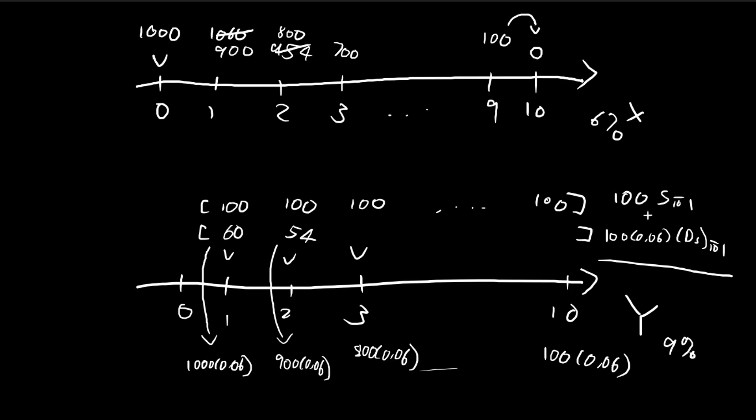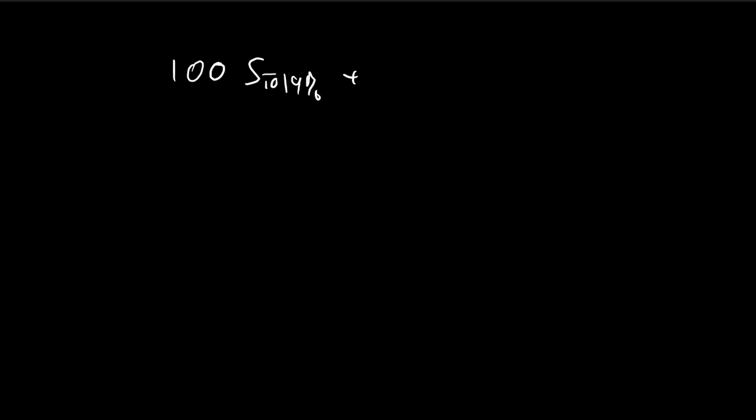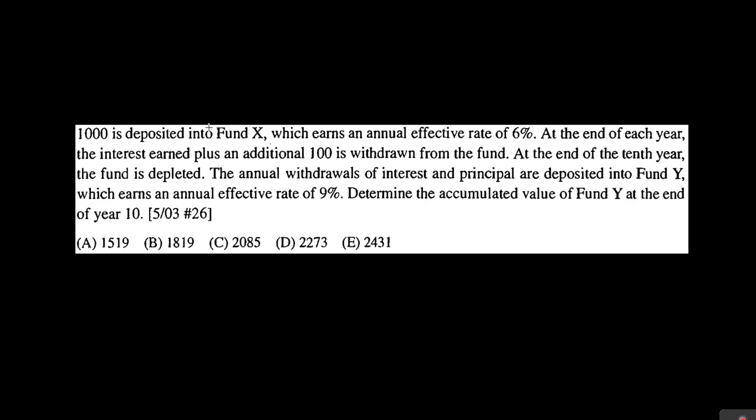So long story short, it means our answer is actually given by this expression. So 100 times 0.06, that's just 6, 9%. All you have to do is just to substitute the formulas into these two expressions. And then the final answer that you get is going to be equal to C. It's going to be 2085.